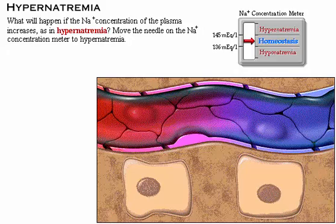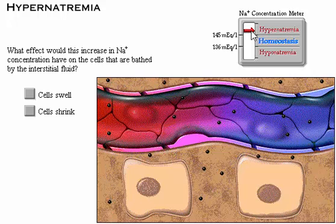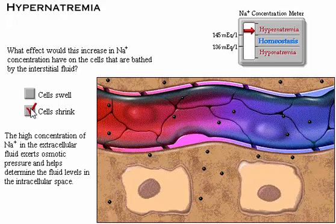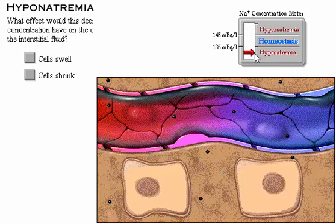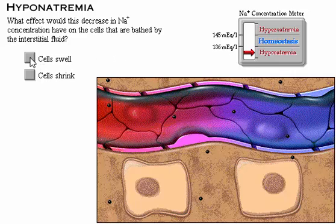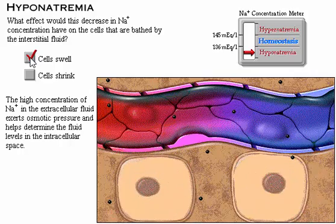If the sodium concentration of the plasma increases, as in hypernatremia, the high concentration of sodium in the extracellular fluid exerts osmotic pressure and helps determine the fluid levels in the intracellular space. In hyponatremia, the water moves into the cell and the cell expands slightly.